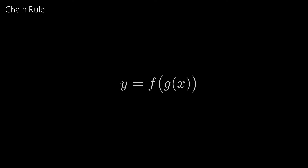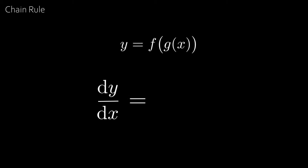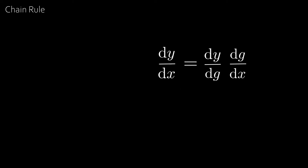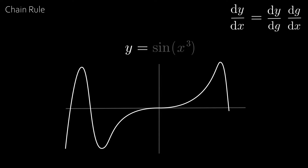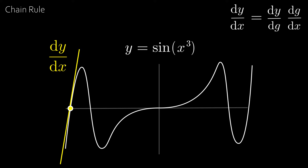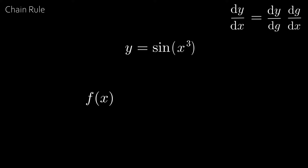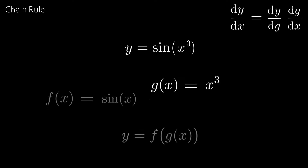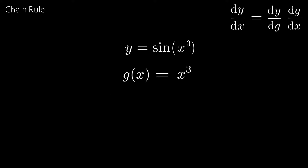The chain rule states that if y equals f of g of x, or f composed with g, then dy by dx is equal to dy by dg times dg by dx. You're going to grasp what this means through examples. Take y equal to sin x cubed. To find dy by dx, we first need to see that it's a composition, so let's find f of x and g of x. If we take f of x equal to sin x and g of x equal to x cubed, then y equals f of g of x, so we can use the chain rule.